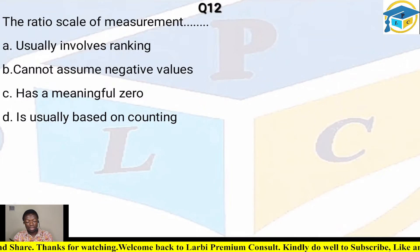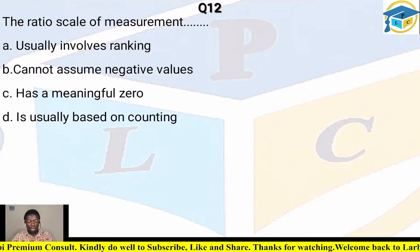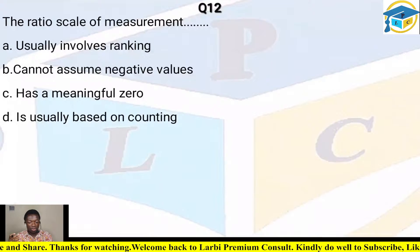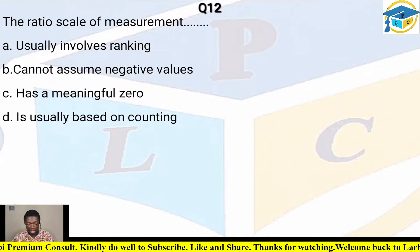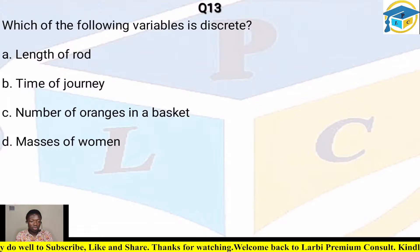Question twelve: the ratio scale of measurement — A) usually involves ranking, B) cannot assume negative values, C) has a meaningful zero, D) is usually based on counting. In ratio scale, zero is meaningful — for example, zero money means you have nothing. The correct answer is C — the ratio scale of measurement has a meaningful zero.